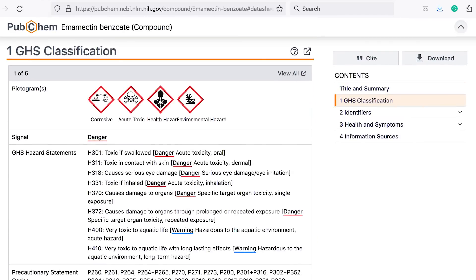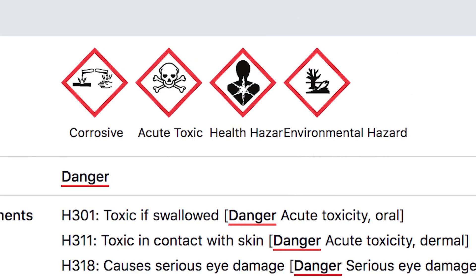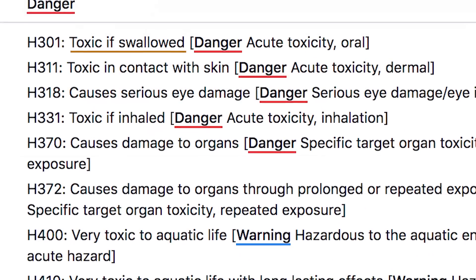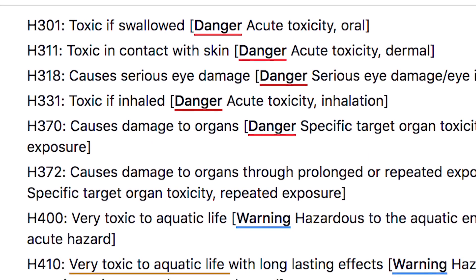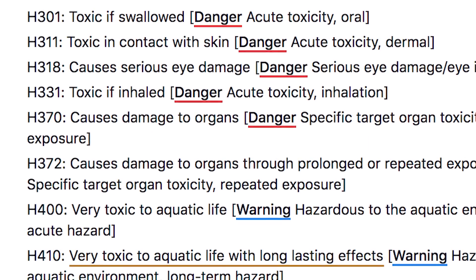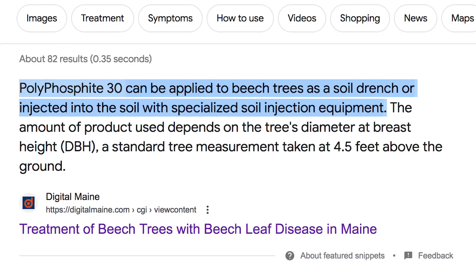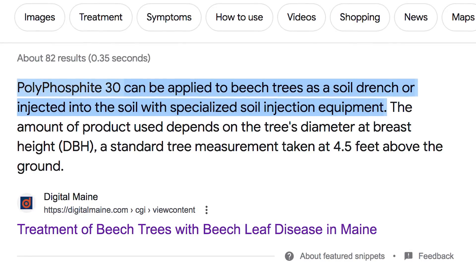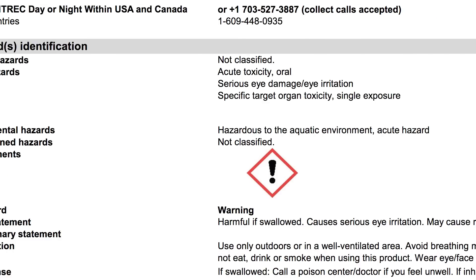It is worth noting that emamectin benzoate is corrosive, acutely toxic, a health hazard, an environmental hazard, toxic if swallowed, causes damage to organs, and is very toxic to aquatic life with long-lasting effects. There is also a product known as polyphosphate 30, a fertilizer commonly used on golf courses, which is recommended by some people as a treatment for beech leaf disease — though it too is acutely toxic and hazardous to the aquatic environment.